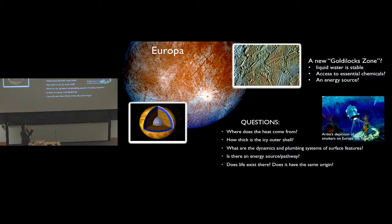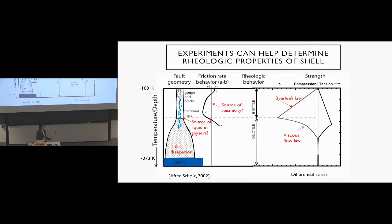So that brings about a lot of questions. Answering these questions is really one of the forefront missions of NASA in the search for life outside of our planet. These are just five that came to mind for me. Where does this heat come from? How thick is the icy outer shell? And what are the dynamics and plumbing systems of surface features? Are there any energy sources similar to this cartoon, but do they have things like this that could be energy sources? And of course, does life exist? If it does, does it have the same origin as ours? Now I'm not an astrobiologist, so I have no contribution to this question and not really the energy source pathway either. But this stuff, how does that shell behave? How do we generate heat from this icy shell? Figuring out the dynamics and plumbing systems, that's something I could do. I could work on this.